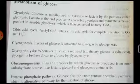Lactate is the end product in anaerobic glycolysis, while pyruvate is the end product in aerobic glycolysis. So the glycolysis end products depend on the situation — whether it is aerobic or anaerobic. Aerobic equals pyruvate as the end product, and anaerobic equals lactate as the end product.